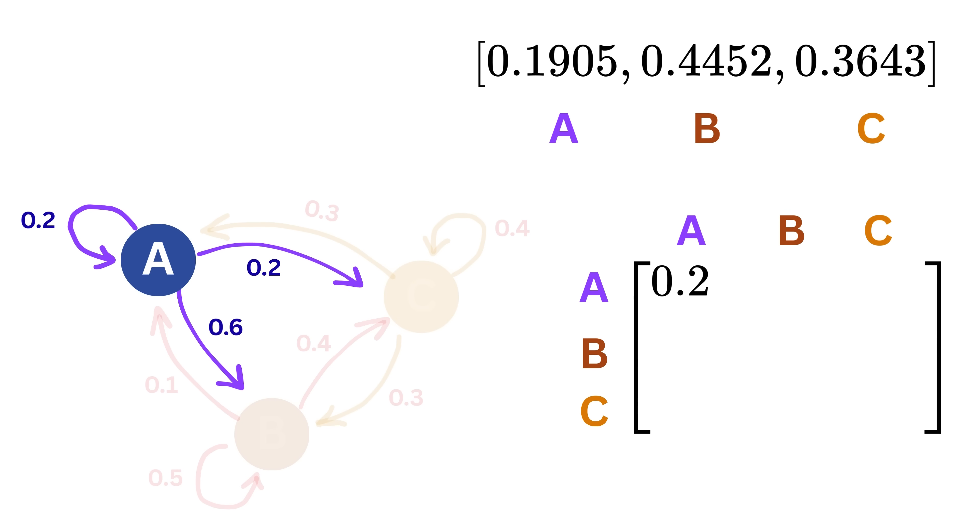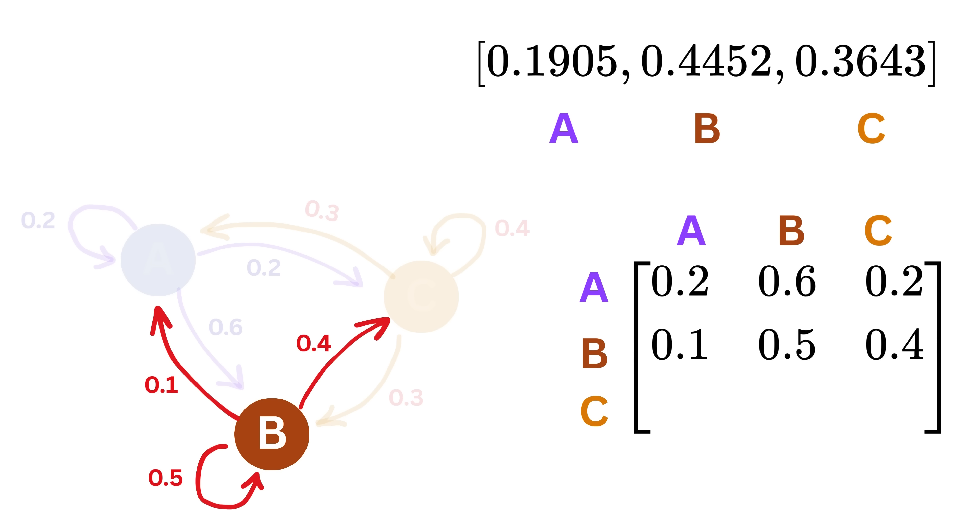Similarly, the second row, for page B, is this, and the third row, for page C, is this. We usually label this matrix as capital P.